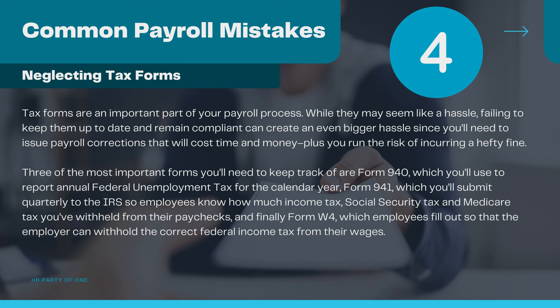Three of the most important forms you'll need to keep track of are Form 940, which you'll use to report annual federal unemployment tax for the calendar year; Form 941, which you'll submit quarterly to the IRS so employees know how much income tax, Social Security tax, and Medicare tax you've withheld from their paychecks.